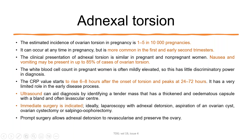On ultrasound, you will see an identifiable tender mass with a thickened and edematous capsule and a bland, often avascular center. If torsion is diagnosed, immediate surgery is needed — ideally laparoscopy with adnexal detorsion and aspiration of the ovarian cyst, or ovarian cystectomy, or salpingo-oophorectomy. Prompt surgery is very important for revascularization and preservation of the ovary.